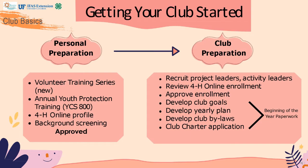Now that you know the requirements, here's what you need to have completed first. You will need to create a 4-H online profile, input your demographics, and select the club you plan to volunteer for. Once completed, you will take the Annual Youth Protection Training, YCS 800, found inside the 4-H online system under trainings. We will then submit your profile for a background screening, which includes a volunteer interview conducted by the 4-H agent, reference checks, and the DCF background screening and sexual offender or predator search documentation. Once screened and approved, you can begin recruiting project and activity leaders, developing club goals, a yearly plan, club bylaws, and you can complete the club charter application.